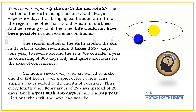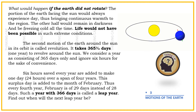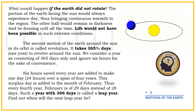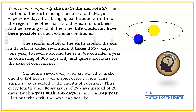This surplus day is added to the month of February. Thus, every fourth year, February has 29 days instead of 28 days. Such a year with 366 days is called a leap year. Find out when the next leap year will be.